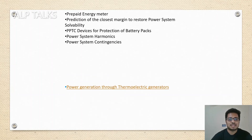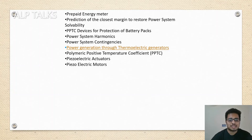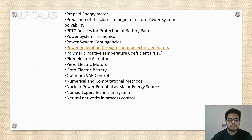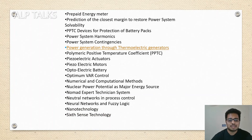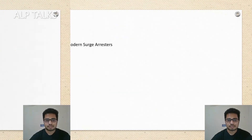Power system harmony — this is also one of the important areas in research. Power systems, power system contingencies, power generation through thermoelectric generators, polymeric positive temperature coefficient — PPTC. Piezoelectric actuators, piezoelectric motors, optoelectric battery, optimum VAR control, numerical and computational methods, nuclear power potential as a major energy source, Nomad expert technical system, neural networks in process control, neural networks and fuzzy logic, nanotechnology, sixth sense technology, bubble power, and live line or hotline maintenance for transmission lines.